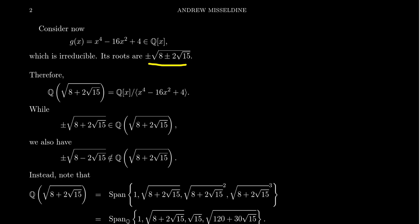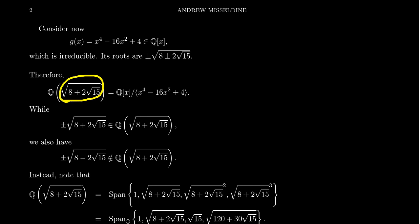I claim that the roots of this polynomial are going to be ±√(8 ± 2√15). There's a choice of plus or minus inside the radical, and also plus or minus outside the radical, giving four possible roots — which makes sense for a degree 4 polynomial. In this situation, let's take one of these roots. I'm going to choose positive in both cases: take the number α = √(8 + 2√15).